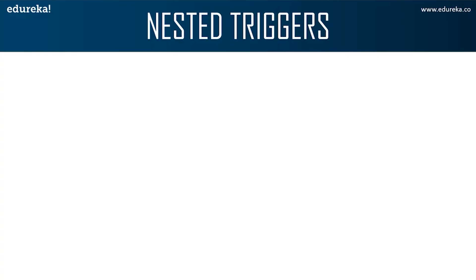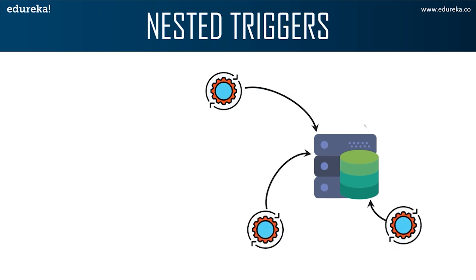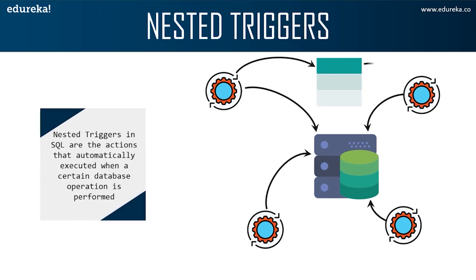We can also create a nested trigger that can perform multiple processes, but handling and terminating it at the right time is very important. If we don't end the trigger properly, it may lead to an infinite loop. Continuing from the earlier scenario, Anna sent an email for every new customer added to the database. Now, what if she wishes to keep track of the number of customers to whom the email was sent? Anna needs to create a nested trigger to keep the count along with sending the email. So that was all about the syntax of triggers.